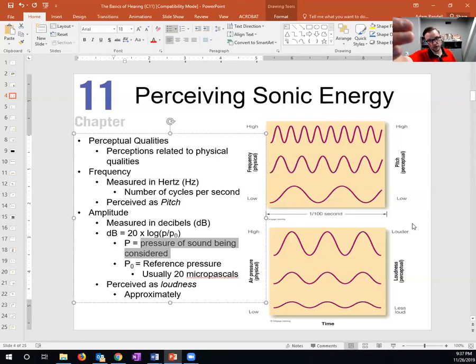That would be our sound being considered, so we would identify the pressure in micropascals caused by that clap. We would divide that by a reference pressure, usually 20 micropascals. So let's say it was 20,000. We would divide 20,000 by 20. Whatever that quotient is, we would take the natural log of that, so we would need a scientific calculator. Whatever that number is, is then multiplied by 20.